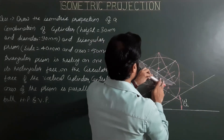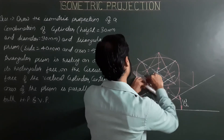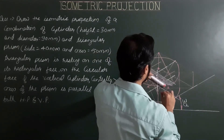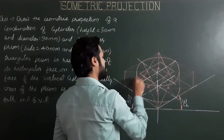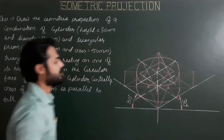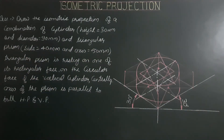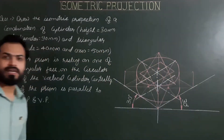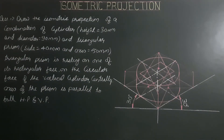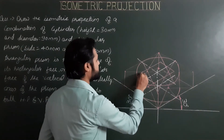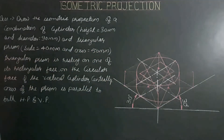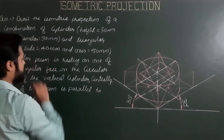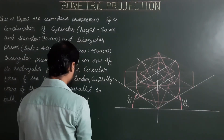Draw lines parallel to the second center line as well. This is the rectangular face of the triangular prism, which is resting on the upper circular face of the cylinder. We have two corners of the triangular face established. Next, create the helping figure for the triangle: the side is 40, so draw a regular equilateral triangle of size ISO 40.